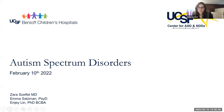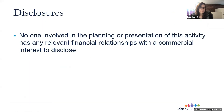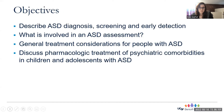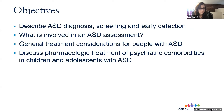Thank you for the introduction. I'm really happy to be here with Dr. Lin and Dr. Salzman to talk about autism spectrum disorders. We don't have anything to disclose for this presentation. Today we'll describe the diagnosis, screening, and early detection of children with autism spectrum disorder. We'll describe what's involved in an autism assessment and review general treatment considerations. And last, we'll discuss pharmacologic management for psychiatric comorbidities in children and adolescents with autism.